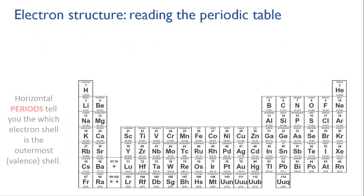So to summarize, the periods, that's the horizontal rows, tell you which electron level is the outermost for that atom. For instance, for potassium, the valence shell is the fourth electron level because it's in the fourth period. And for lead, it's the sixth electron level as the valence shell. The vertical groups of the table tell you the number of electrons that are in the valence shell. Or in other words, how many valence electrons the atom has.